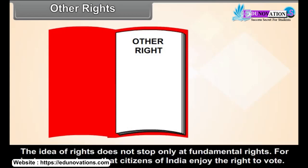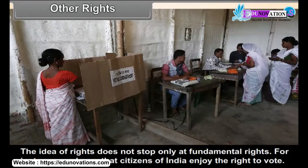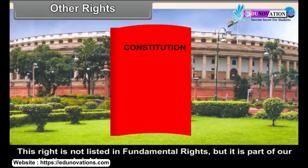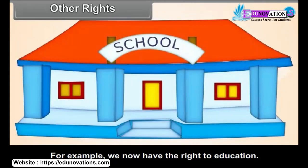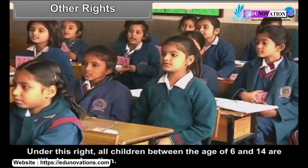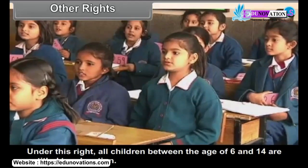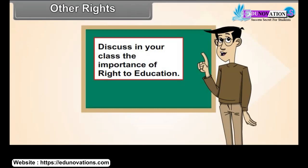Other Rights. The idea of rights does not stop only at fundamental rights. For instance, citizens of India enjoy the right to vote. This right is not listed in fundamental rights, but it is part of our constitutional rights. Even after the Constitution was written, the scope of our rights has been expanded. For example, we now have the right to education. Under this right, all children between the age of 6 and 14 are entitled to education. Activity: Collect information about the right to education and discuss in your class the importance of the right to education.